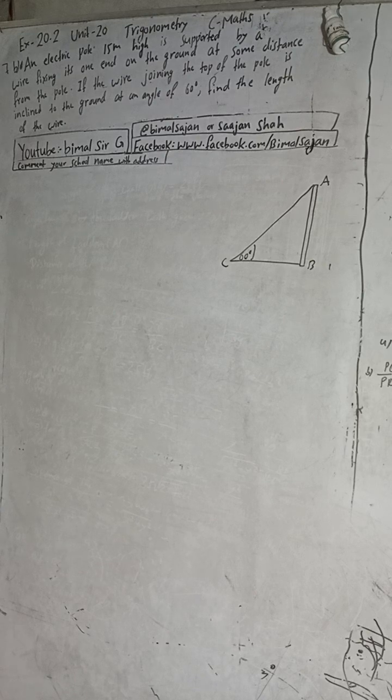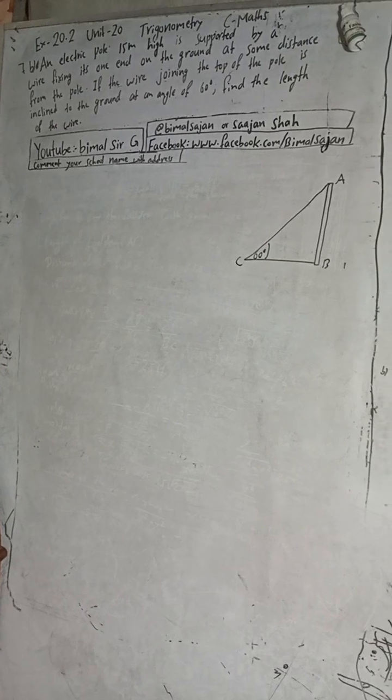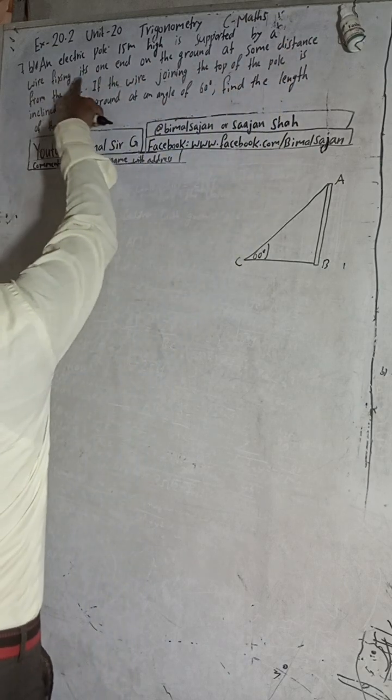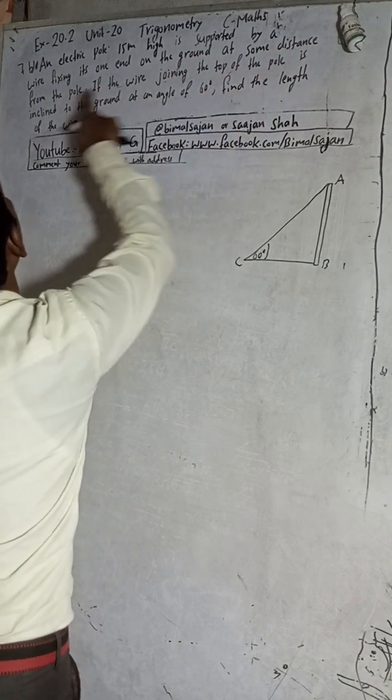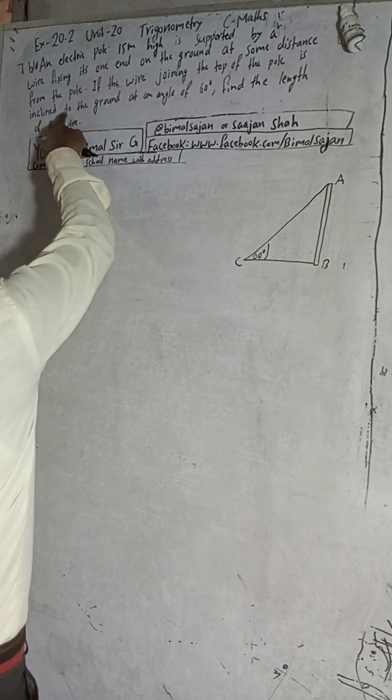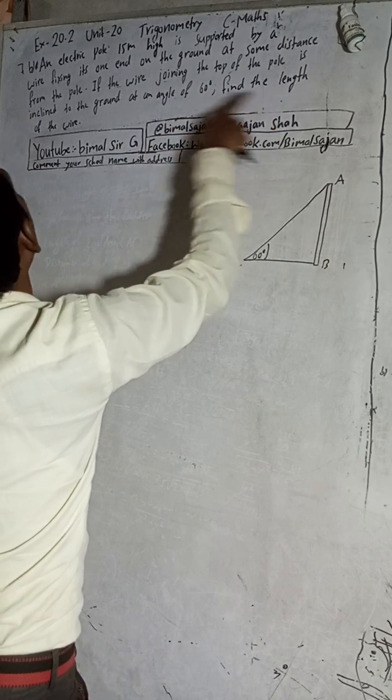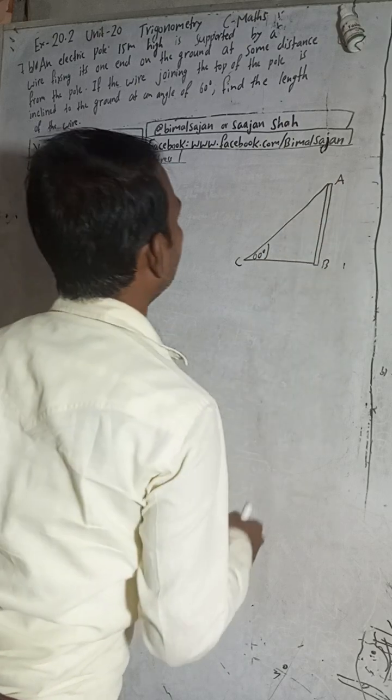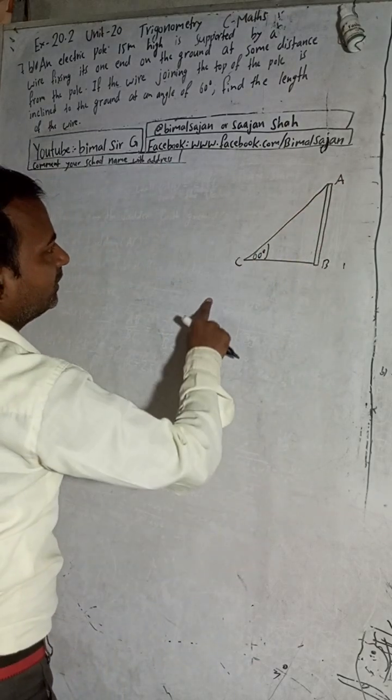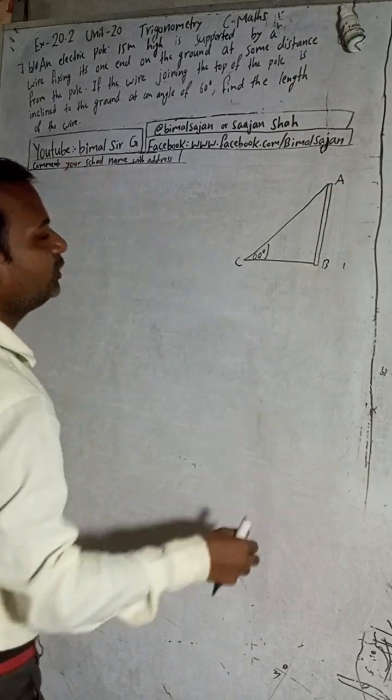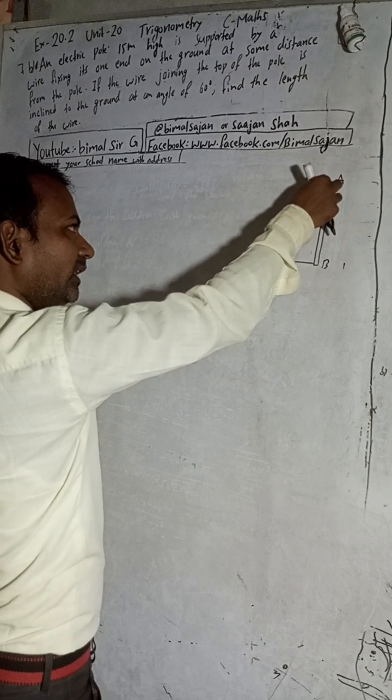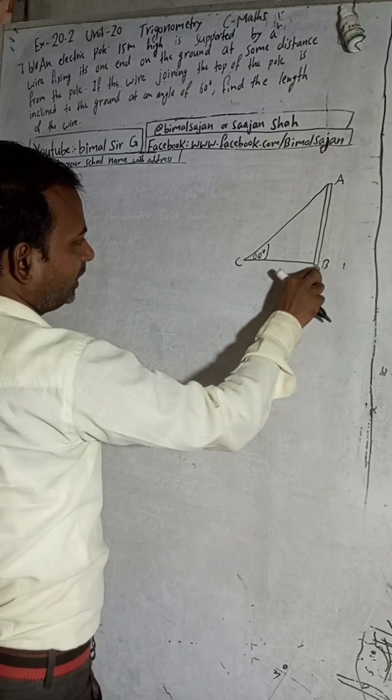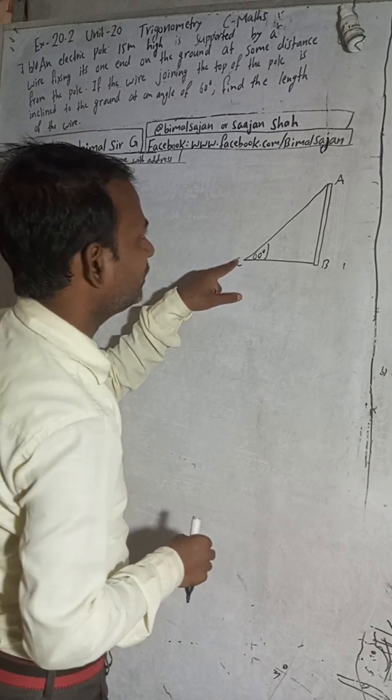An electric pole 50 meter high is supported by a wire fixing its one end on the ground at some distance from the pole. If the wire joining the top of the pole is inclined to the ground at an angle of 60 degrees, find the length of the wire. This is a pole AB. Height of the pole, this is a pole and this is a wire.